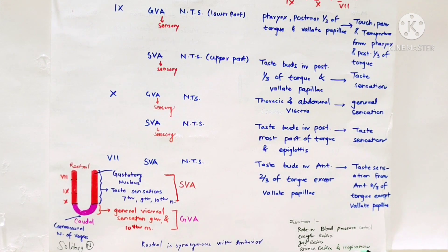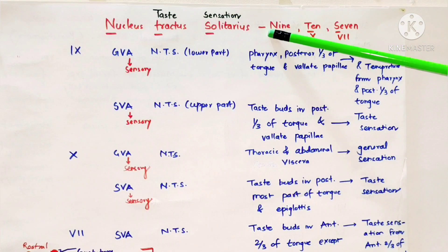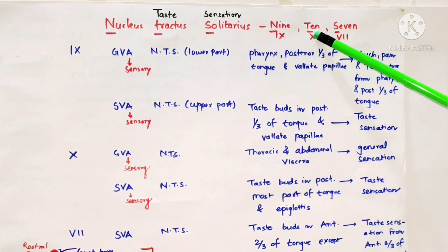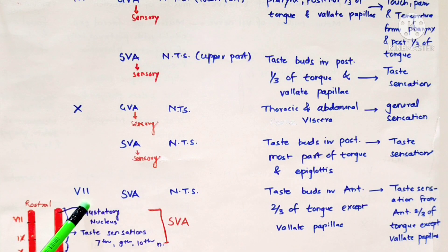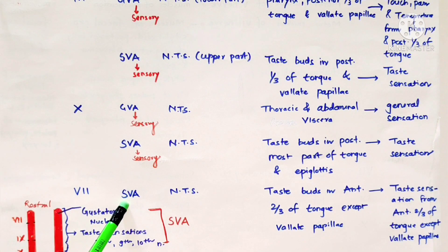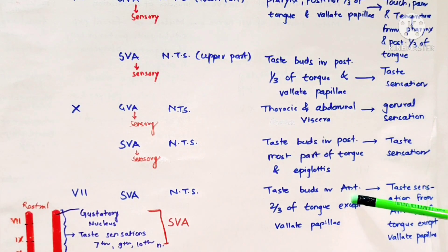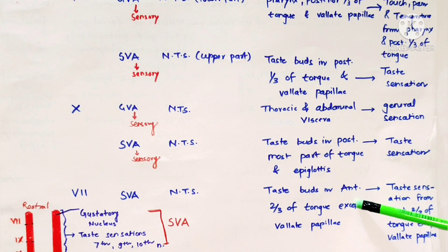Majority of taste sensation reaches rostral portion of solitary nucleus. Other general visceral sensation enters caudal portion of solitary nucleus. Functionally, cells of nucleus tractus solitarius play a role in blood pressure control, cough reflex, gag reflex, sneeze reflex, and inspiration.